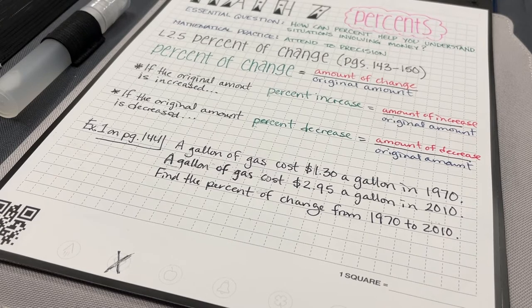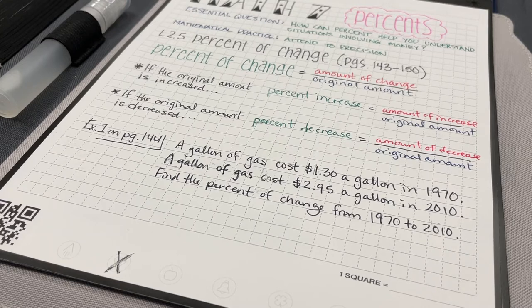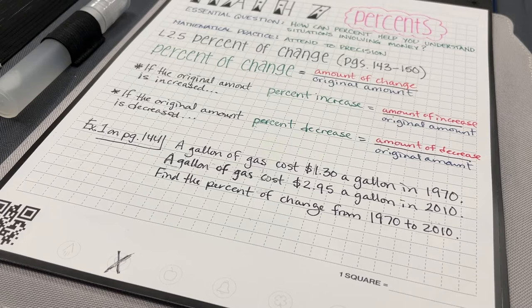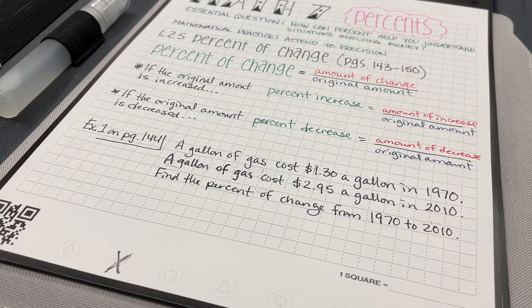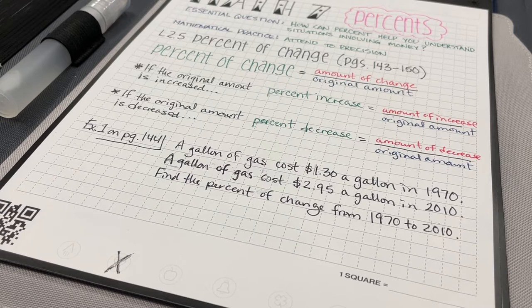Example 1 on page 144 says that a gallon of gas cost $1.30 a gallon in 1970. A gallon of gas cost $2.95 a gallon in 2010. What we want to do is to find the percent of change from 1970 until 2010.